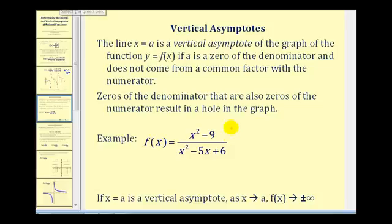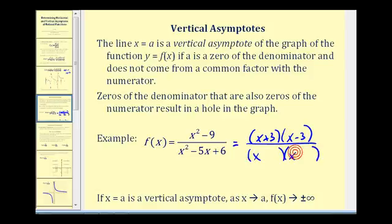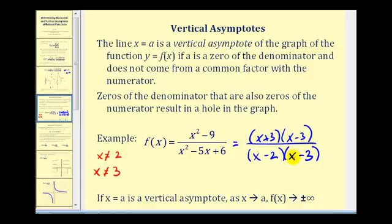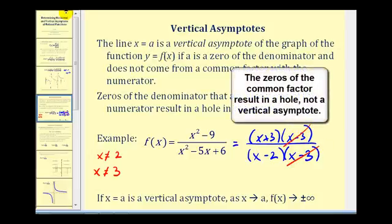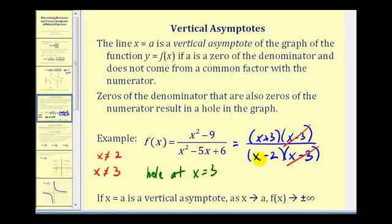For example, factoring this function gives x plus three times x minus three in the numerator, and x minus two times x minus three in the denominator. There are two values that make the denominator zero: x equals two and x equals three. Since x equals three is also a zero of the numerator, there's a hole at x equals three, not a vertical asymptote. However, x equals two is a zero of the denominator but not the numerator, so there is a vertical asymptote at x equals two.